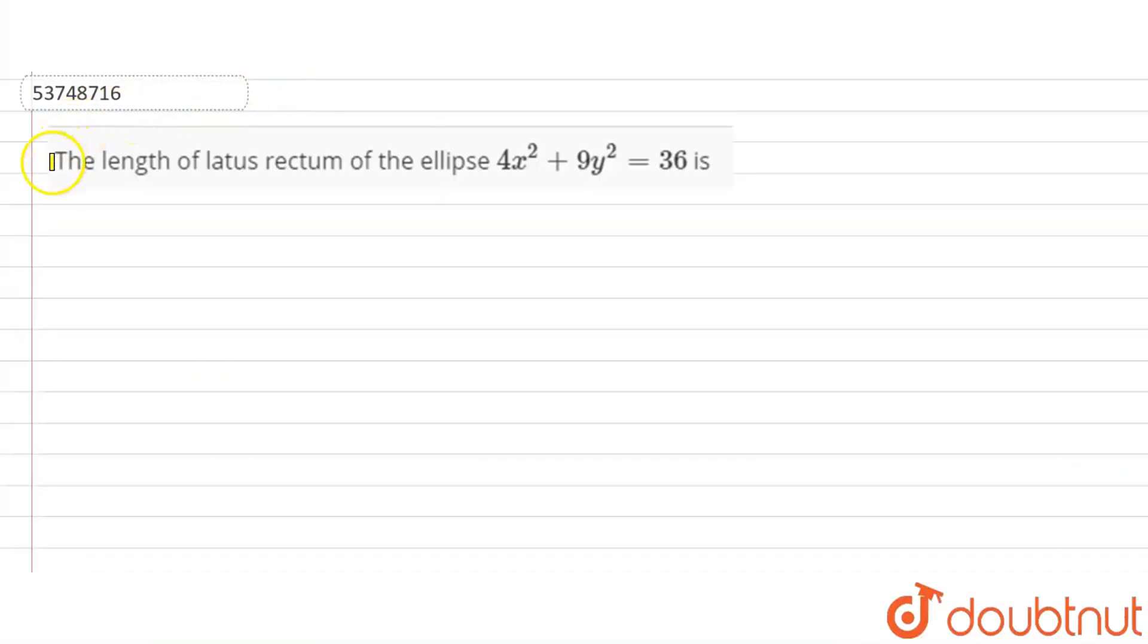Hello guys, question is, the length of the latus rectum of the ellipse 4x² plus 9y² is equal to 36 is?